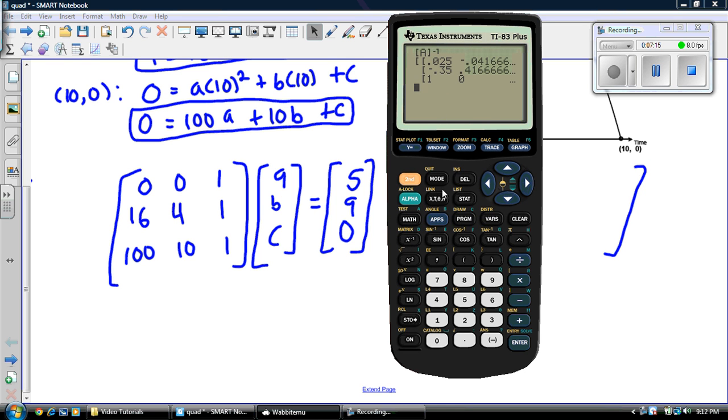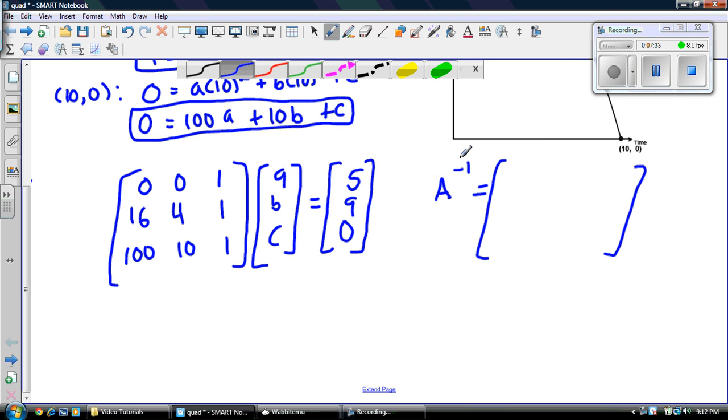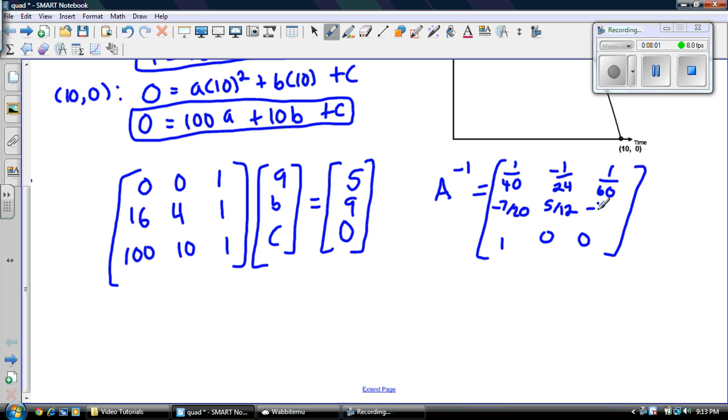So, you've got some pretty gnarly decimals there. So, my recommendation would be just press math and go fraction. And turn that into something a little bit more reasonable to look at. So, we got some pretty good fractions there. So, let me just write that matrix down. So, I got 1/40, negative 7/20, and 1. Negative 1/24, 5/12, and 0. And 0, 1/60, and negative 1/15. Okay? So, that's my inverse matrix. We always show this.